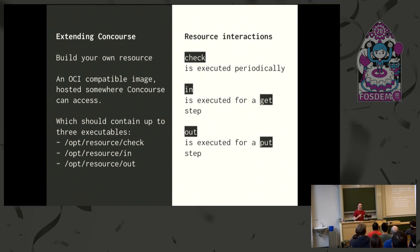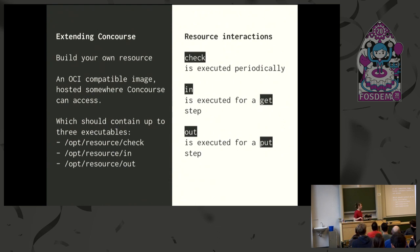If you want to extend Concourse with a resource that doesn't exist, you don't have to write Java. Concourse is a Go project but you extend it by building a Docker image or any other compatible image implementing three executables: check, in, and out. Concourse executes check periodically to emit a list of versions; in is for pulling in stuff and populating local state; and out is when someone puts — here's some stuff, put it wherever the state is living.